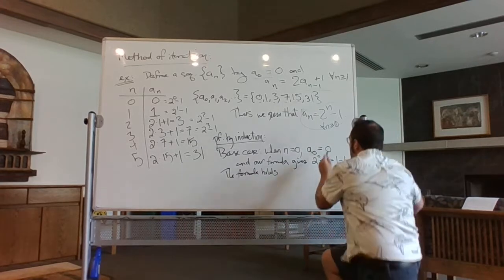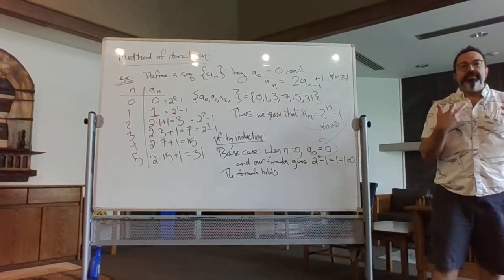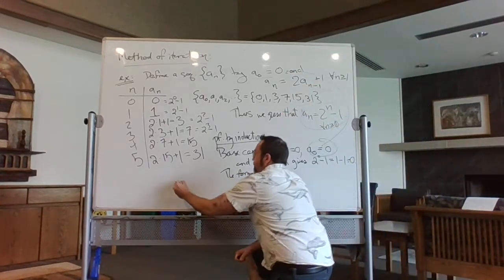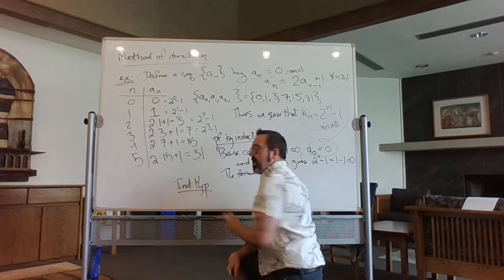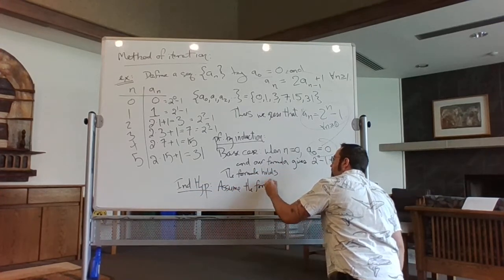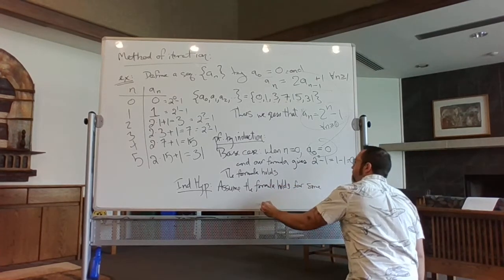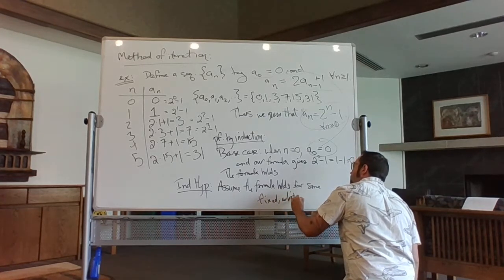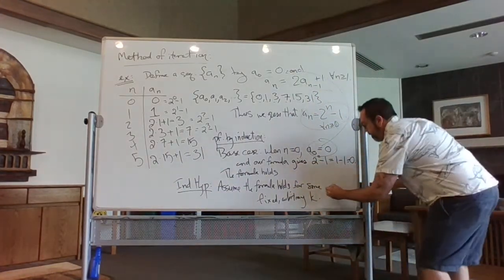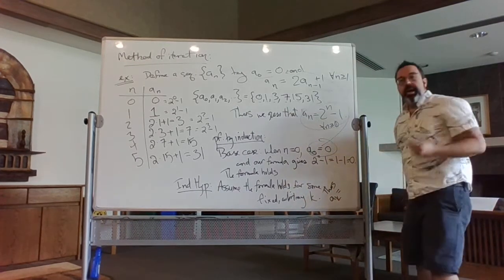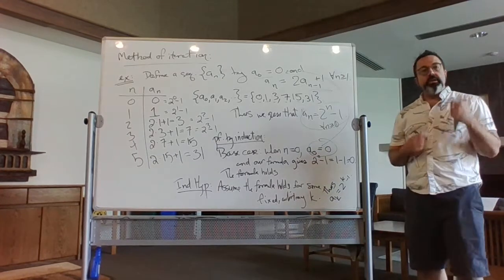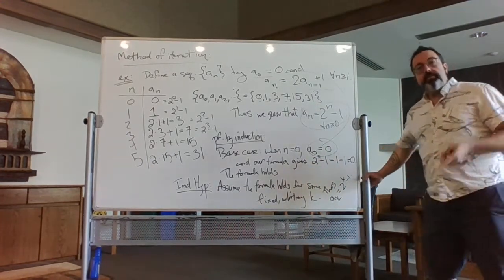The way that a_0 was defined in the definition of the sequence agrees with our formula, so we're good. The inductive hypothesis is the step where you don't do actual work: assume the formula holds for some fixed arbitrary value k. That is, assume a sub k equals two to the k minus one. The trick to induction is to assume it's true for k, and in the inductive step, prove that it's true for k plus one.